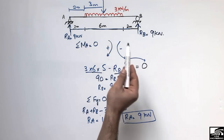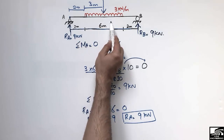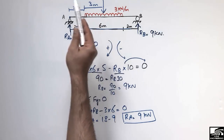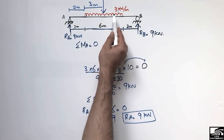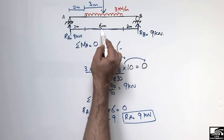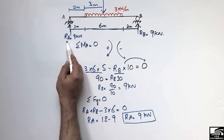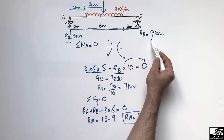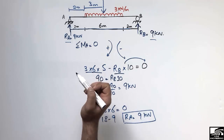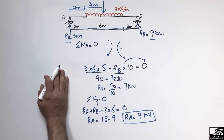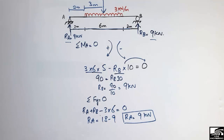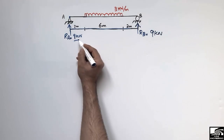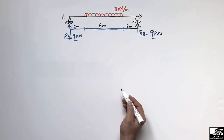The total load is 3 × 6 = 18 kN acting downward, and it is equally shared: RA = 9 kN and RB = 9 kN. With the support reactions found, we can now draw the shear force and bending moment diagrams.